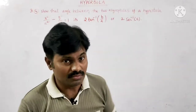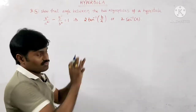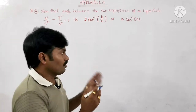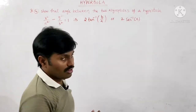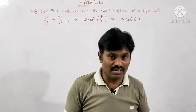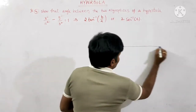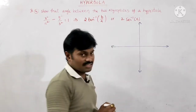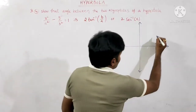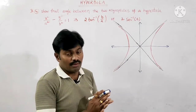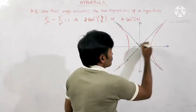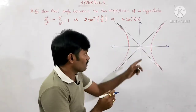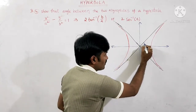We can use this result as a formula, but let's see how we derive it. I am drawing the hyperbola in standard form: x²/a² − y²/b² = 1. This is the transverse axis and the vertical one is the conjugate axis. The black lines in the figure are the asymptotes of the hyperbola.